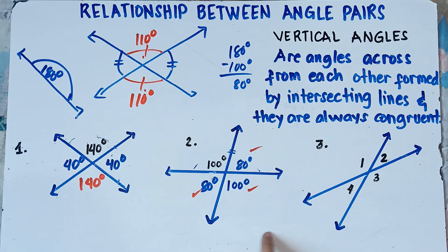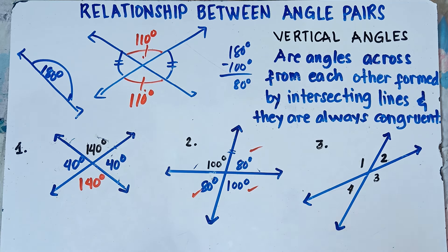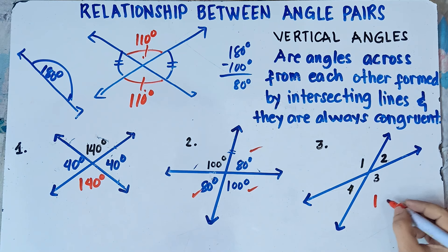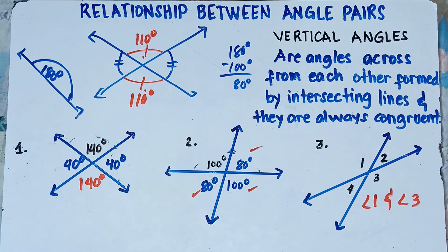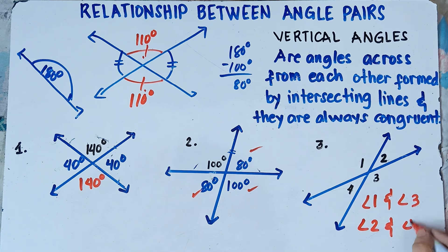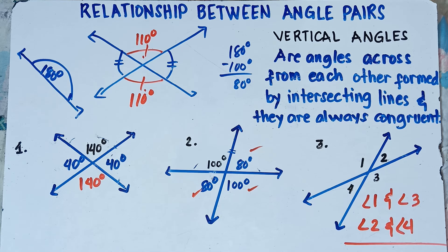Vertical angles are easy — just remember they're always congruent. For number three, what are the vertical angles? Can we say angle 1 and angle 2? Nope, it's not. So angle 1 and angle 3 are vertical angles. What else? That's correct — angle 2 and angle 4 are vertical angles. That's all for vertical angles.